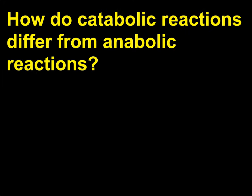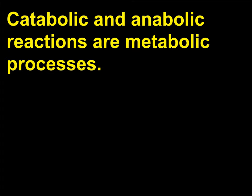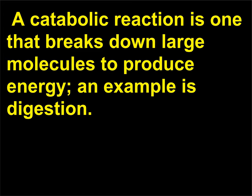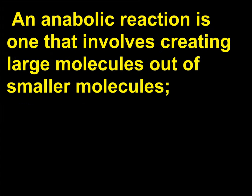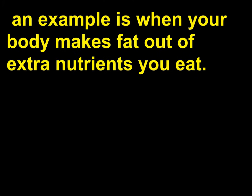How do catabolic reactions differ from anabolic reactions? Catabolic and anabolic reactions are metabolic processes. A catabolic reaction is one that breaks down large molecules to produce energy — an example is digestion. An anabolic reaction is one that involves creating large molecules out of smaller molecules — an example is when your body makes fat out of extra nutrients you eat.